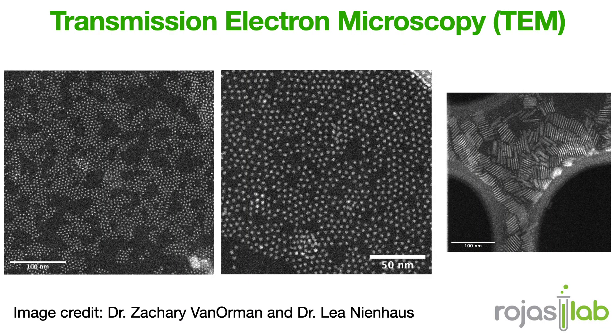Typically, quantum dots range from 2 to 10 nanometers in size, meaning that they are just a few atoms wide. A friend of mine sent me these TEM images, which are looking at the different sizes of quantum dot materials. Notice that the scale is incredibly small in the nanometer range. And this small size is what makes quantum dots so unique.